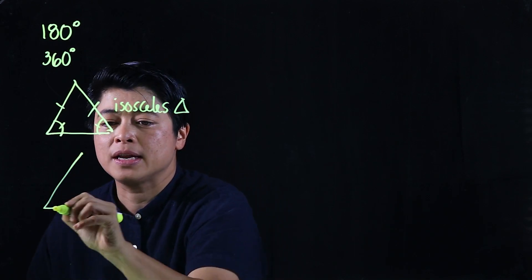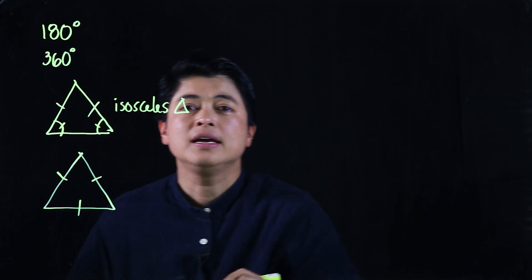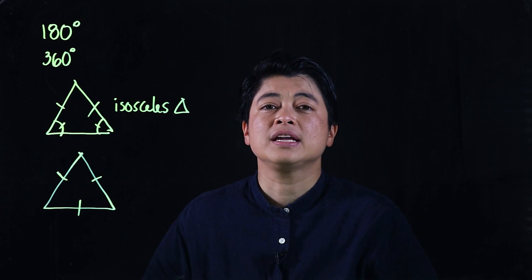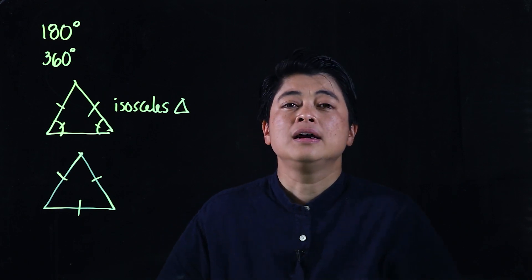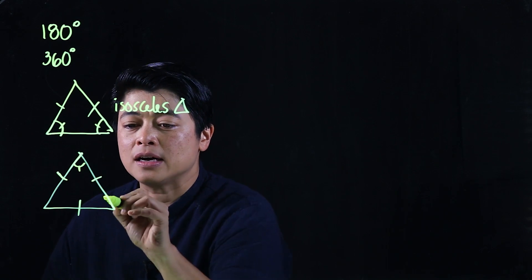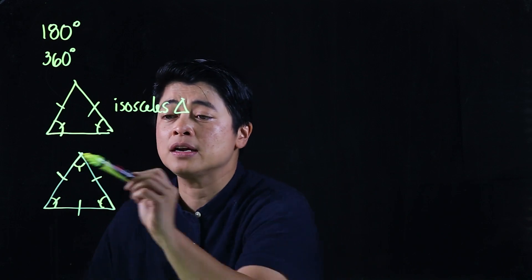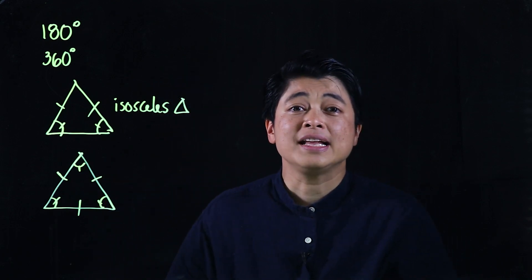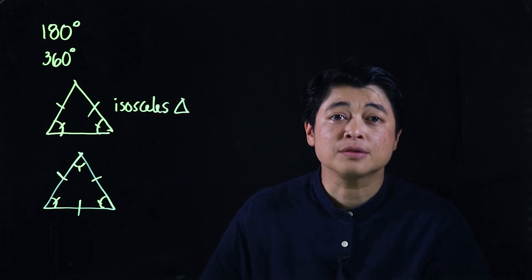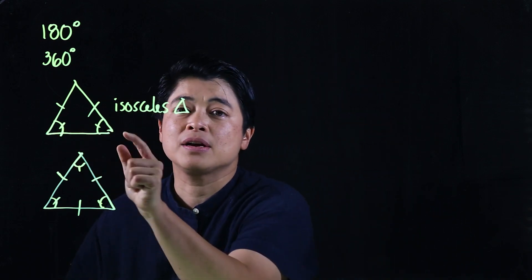If it were an equilateral triangle — equilateral means all sides are equal — then automatically the angles are also equal. Since a triangle has 180 degrees total, each of these angles will be 60 degrees. But we can't say the same for isosceles, because only two of the three sides are equal.